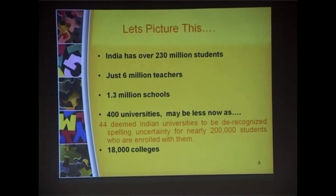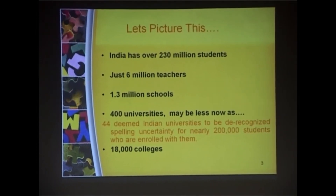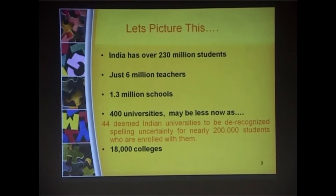Picture this: India has over 230 million students and only 6 million teachers. That means a ratio of one teacher to 38 students, whereas the global education system says a basic ratio should stay around one teacher to five students.